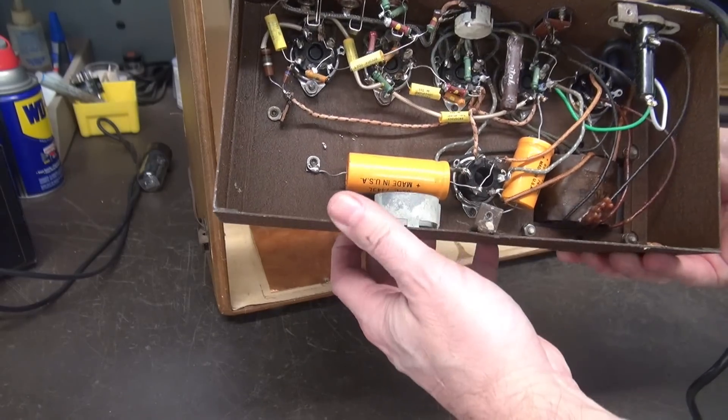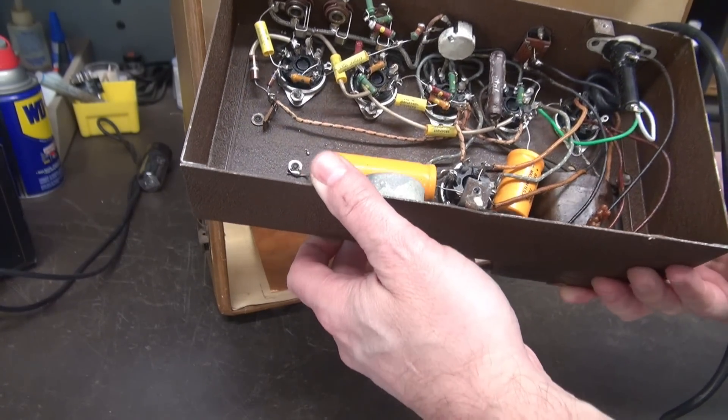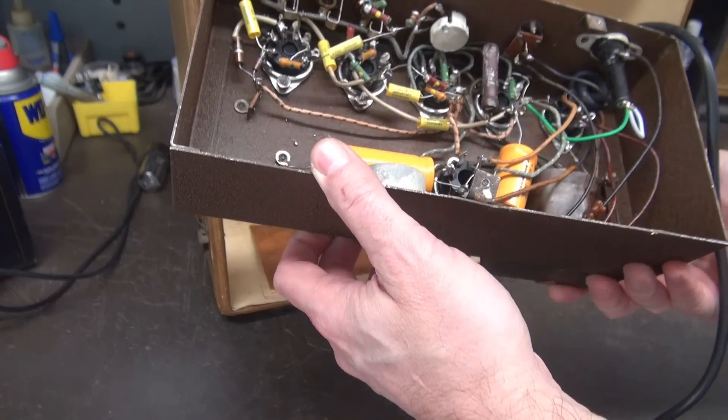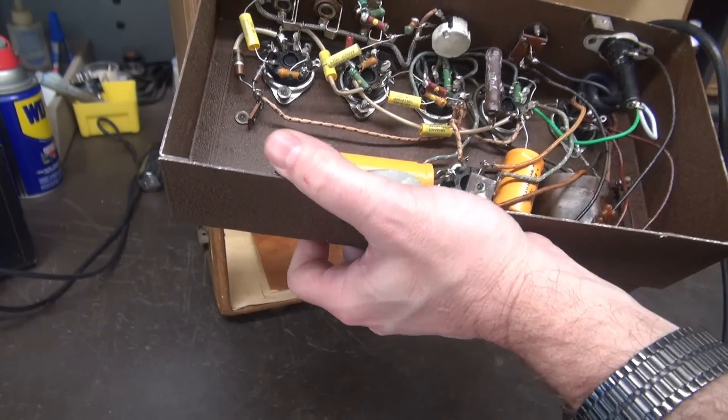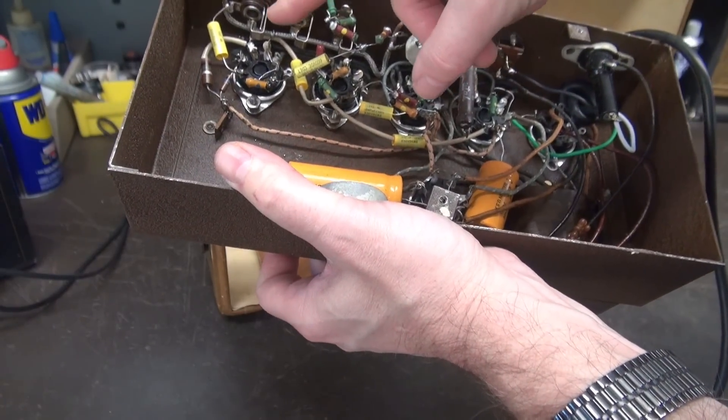All right, so it does have new filter caps installed, and somebody also put in new coupling caps. So it's going to make my job pretty easy. There's that volume pot. There's the wiring going to the input of the preamp.